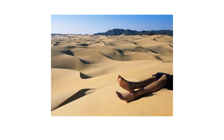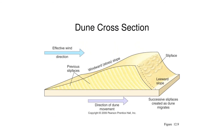A dune is a hill of sand deposited by wind. Dunes generally occur in colonies or fields and are found in flat areas of the desert where there is a large amount of loose sand that has accumulated into one area. Dunes form from the gradual saltation and creep movements of sediments that are too large to be moved by suspension.